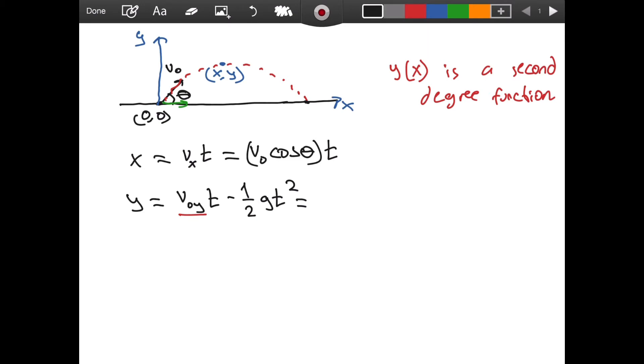So what is v naught y? Well, it is this component. This vertical component of our velocity, of our initial velocity. So it is going to be v naught sine of theta times time minus 1 over 2 g t squared.